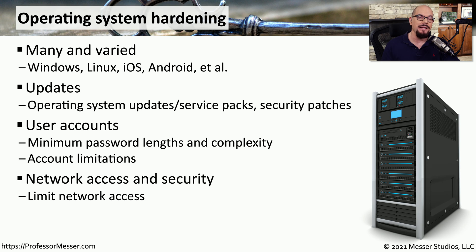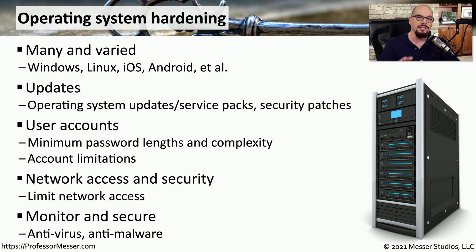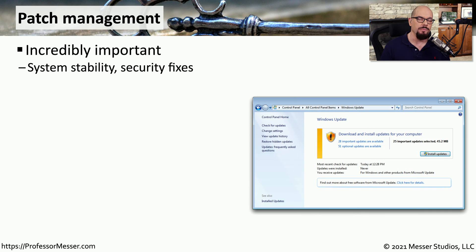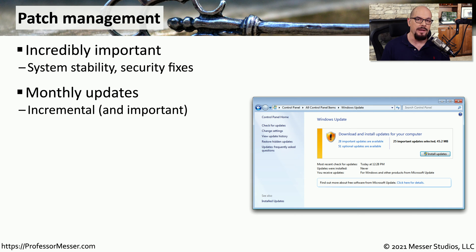We also want to ensure devices have limited access to other components across the network, and limited input from other devices as well. Even after performing all of these hardening tasks, attacks can still occur, which is why we still run anti-virus, anti-malware, and other security software on individual endpoints. Patch management is so important that it is a standard part of the operating system, built into the scheduling and automated systems within the OS. Many operating systems have monthly updates where the manufacturer creates a batch of fixes and pushes them out once a month, keeping systems up to date and protected from vulnerabilities.